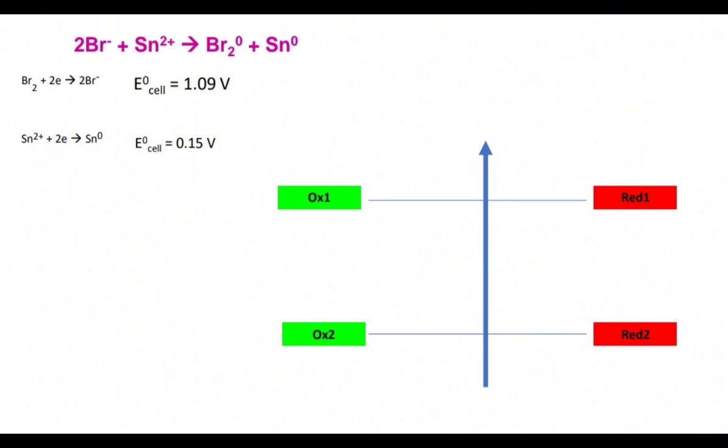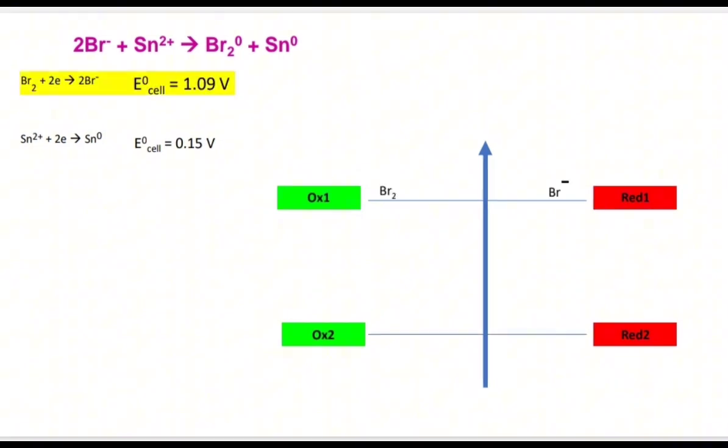On the top part of this arrow we write such a half reaction which has higher potential of cell—so that will be bromine. Let's write. Oxidizer one, as we said, will be that atom or species which has a higher value of cell potential.